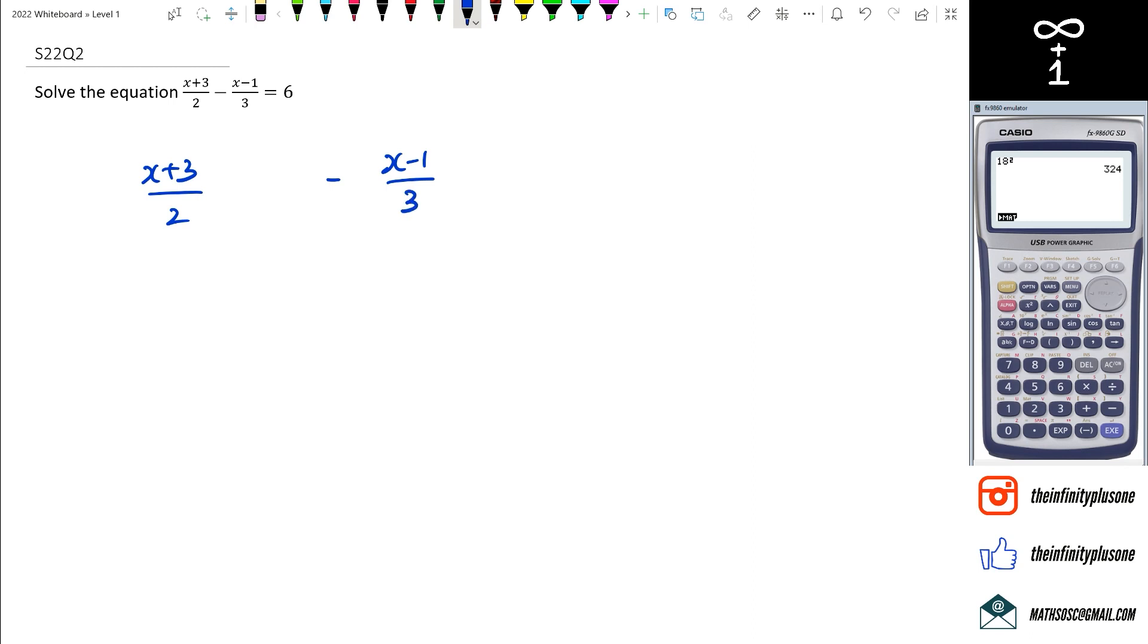If I want to have a look at this, in the denominator I've got 2 and I've got 3 here. Now I know that between 3 and 2, the lowest common multiple is 6.